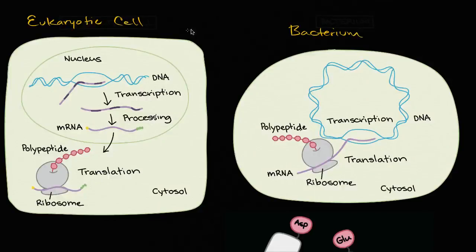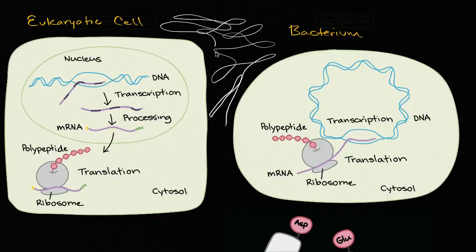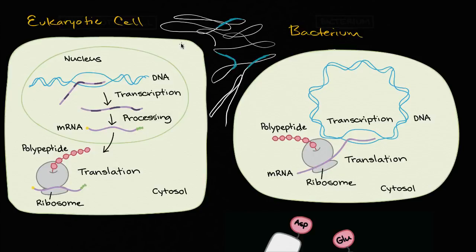We already know that chromosomes are made up of really long strands of DNA all wound up into themselves. On that strand, you have sequences which we call genes. Each of those genes can code for specific polypeptides or specific proteins.